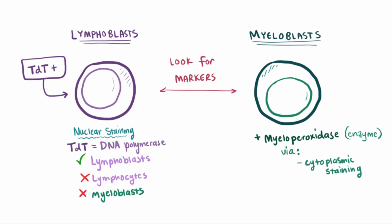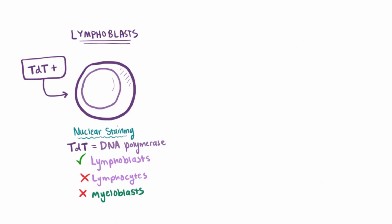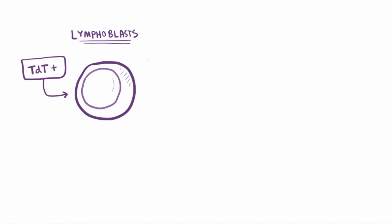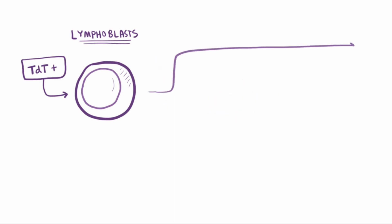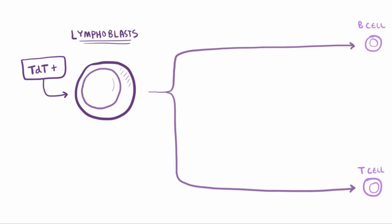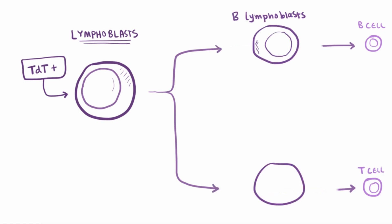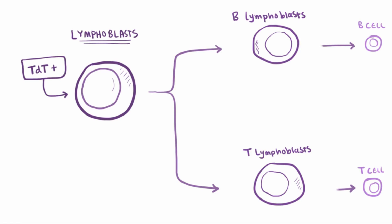Myeloperoxidase is usually identified by cytoplasmic staining, but you can also look for a crystallized version of the enzyme called an Auer rod under the microscope. So if we've got a positive test for TdT, meaning we've got a lymphoblast, we must have acute lymphoblastic leukemia. It gets a little more complicated though — remember that lymphoblasts go on to be either B or T cells. In between they become either B lymphoblasts or T lymphoblasts, so you can have B-ALL or T-ALL.